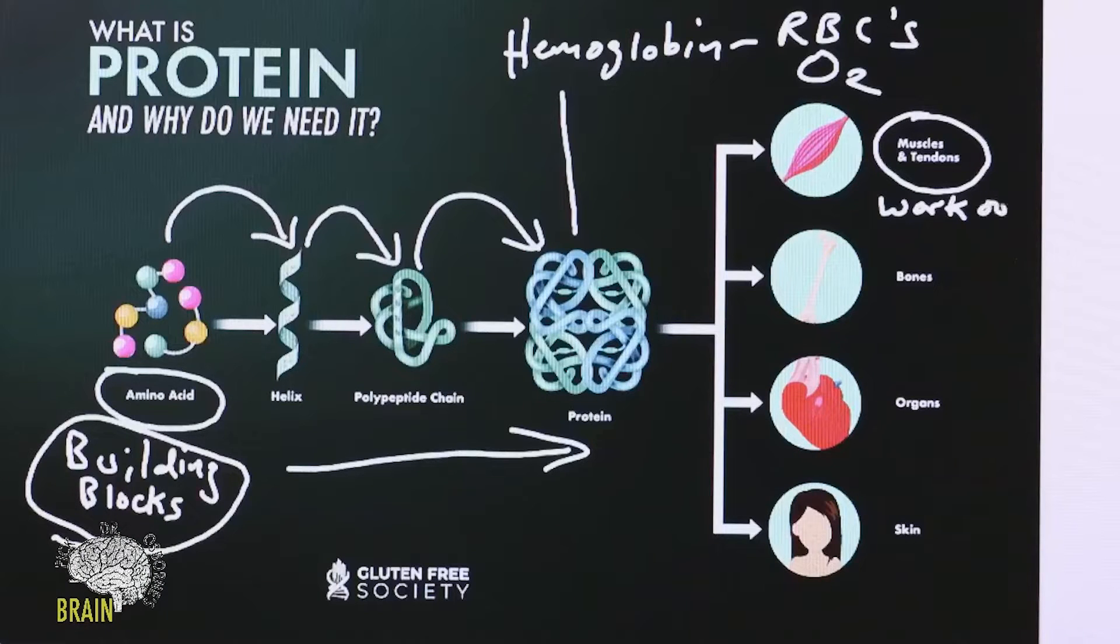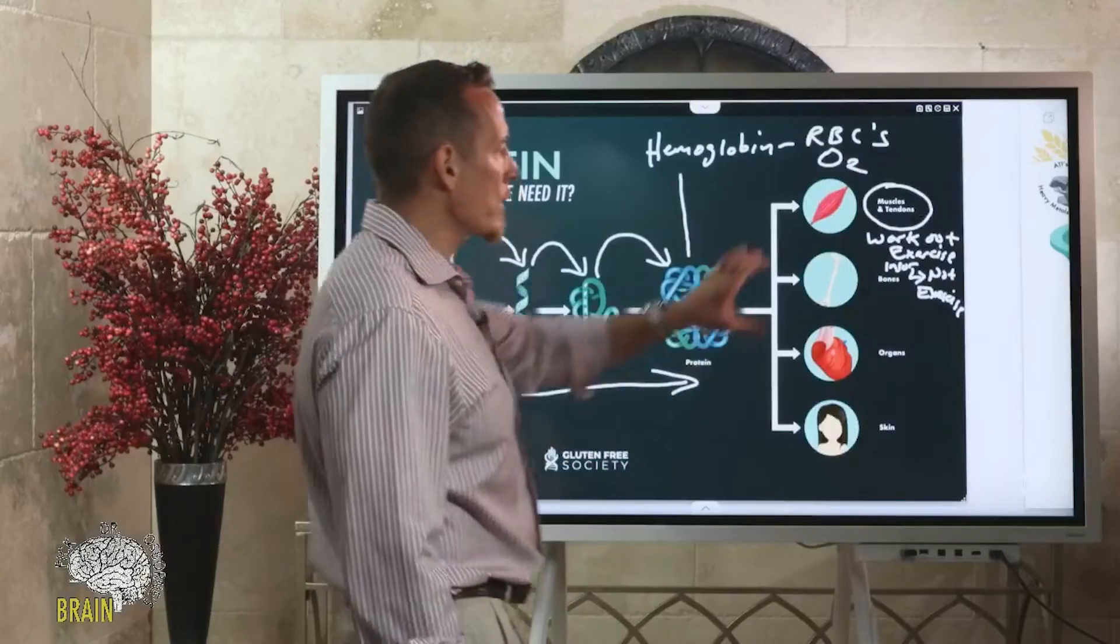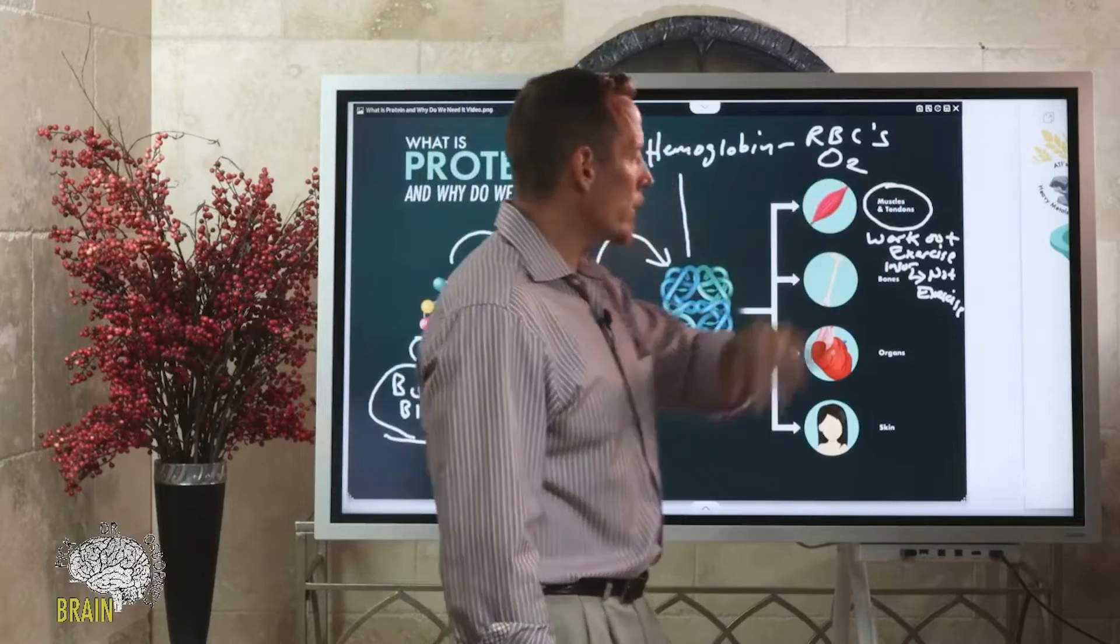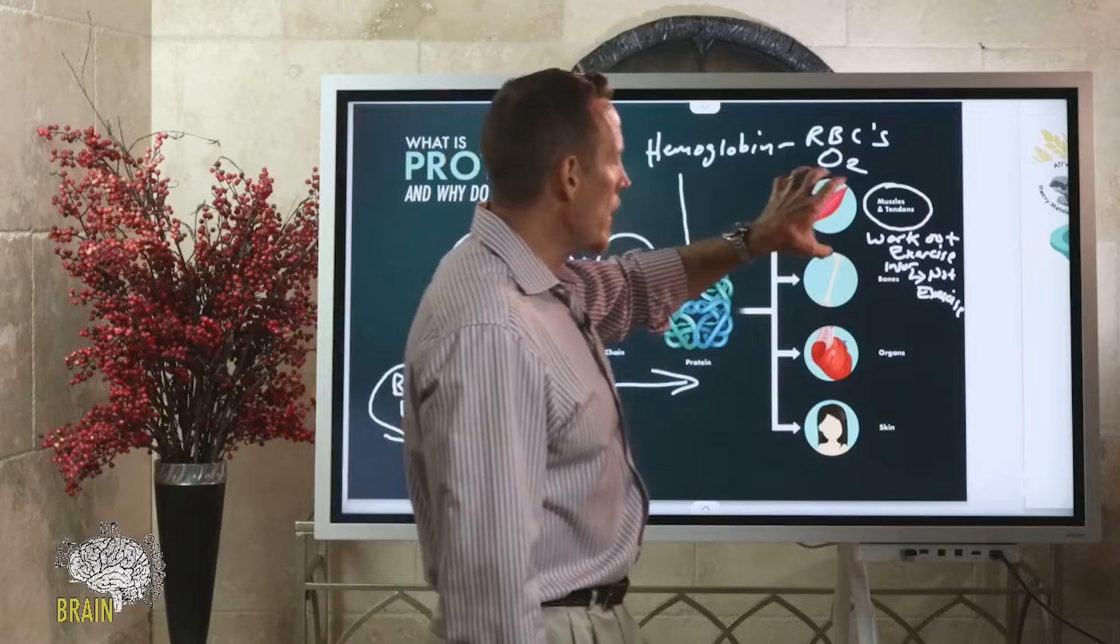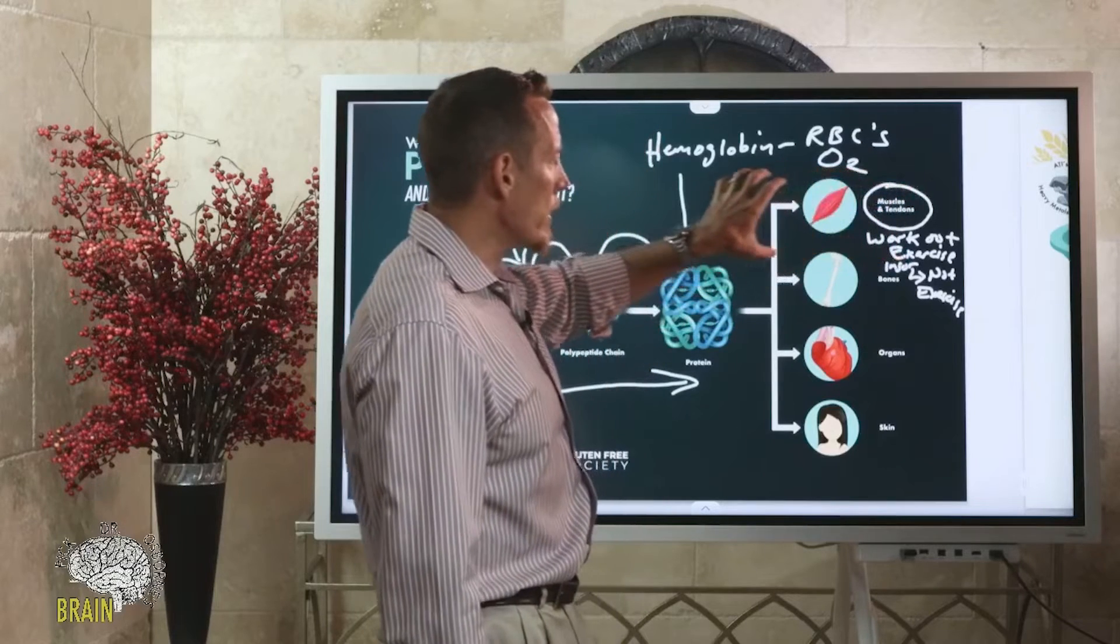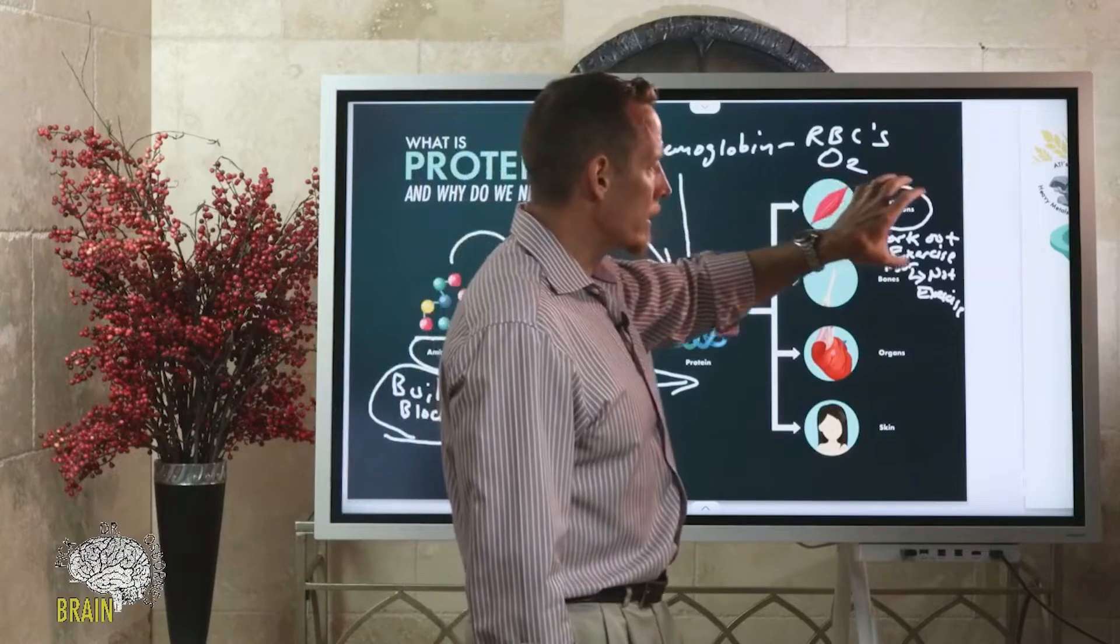Oftentimes what we'll see happen is you will actually injure yourself and end up basically not exercising. Think of it as a cycle. If you exercise, especially those of you that are older, we'll get more into this in just a minute, but if you're trying to exercise and you're trying to do weight resistance or weight bearing activity and you're not getting adequate protein, you'll actually injure yourself.